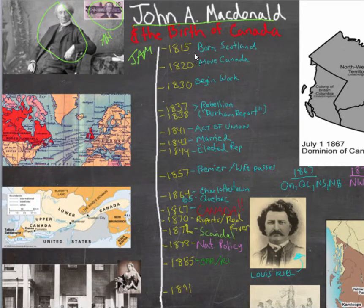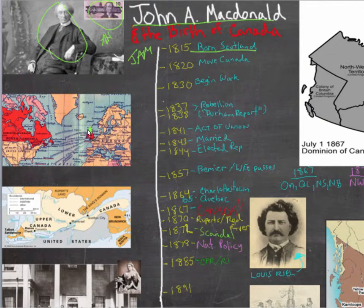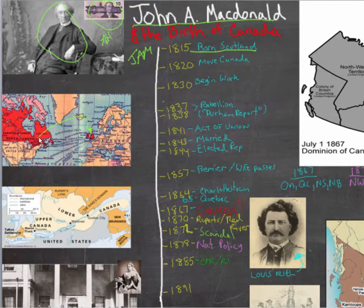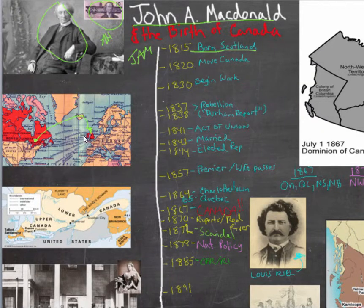MacDonald's story begins in Glasgow, Scotland, right about here, where he was born with 35 children. The family was struggling financially, so the father moved the family to the British colony of Canada, which was part of the British Empire, naturally.